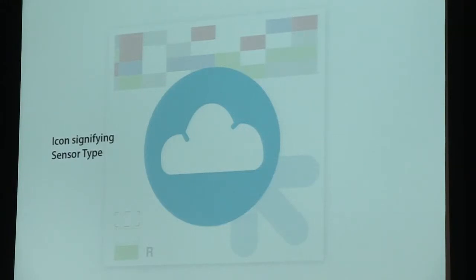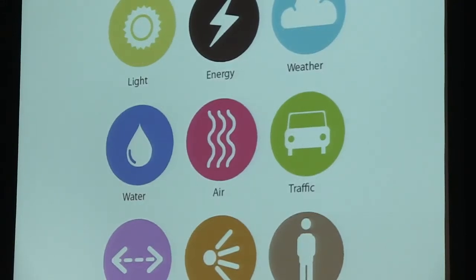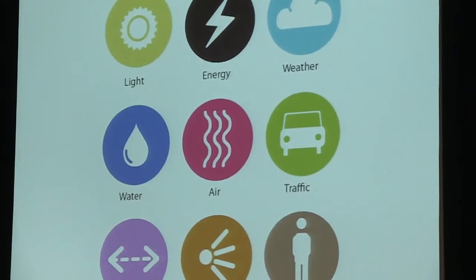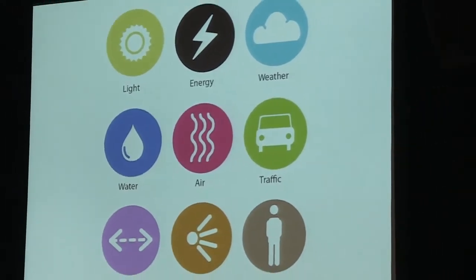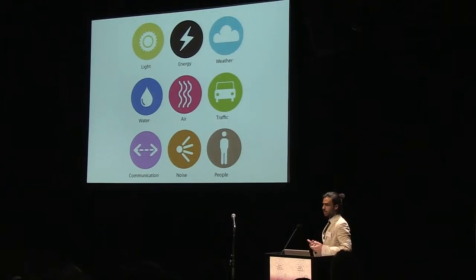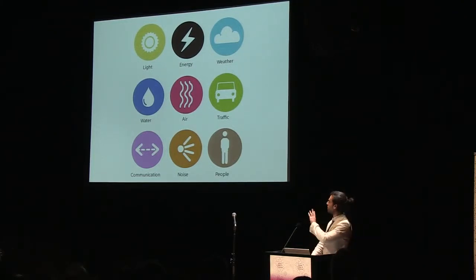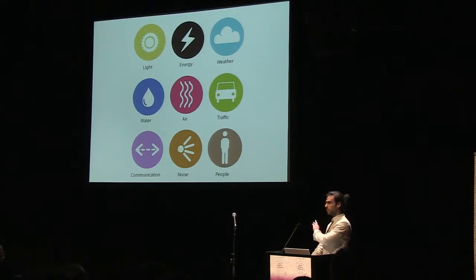Going into more detail about the graphic anatomy of the plaque: it has a very simple icon signifying the sensor type. For us, it was important to think not only about the natural elements you'd want to measure in a city context, but also the unnatural city elements like traffic, communication, and noise — and then obviously human beings, who are a fairly busy element in cities these days. We found it important to categorize these into a very easily identifiable color-coded graphic language so people could identify it from some way away.